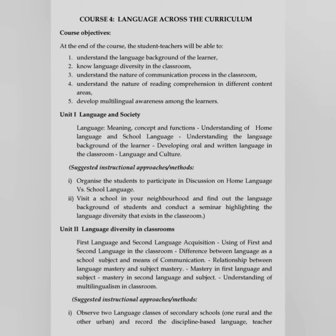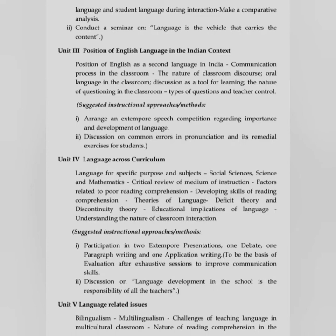Unit 3 covers Position of English Language in the Indian Context: position of English as a second language in India; communication process in the classroom; nature of classroom discourse; oral language in the classroom; discussion as a tool for learning; nature of questioning in the classroom; types of questions and teacher control. Unit 4 is Language Across Curriculum: language for specific purpose and subject — social science and mathematics; critical review of medium of instruction; factors related to poor reading comprehension; developing skill of reading comprehension; theory of language — deficit theory and discontinuity theory; educational implication of language; understanding the nature of classroom interaction.